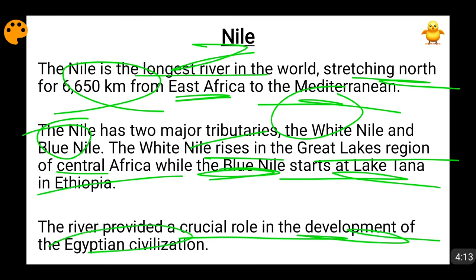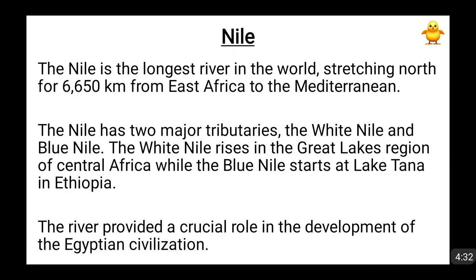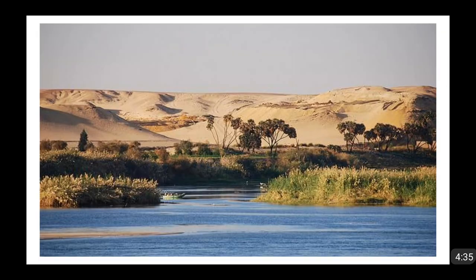All the ancient civilizations — Egyptian civilization, Mesopotamia civilization, and valley civilizations — developed at the banks of rivers, because rivers provide water, which is an essential and basic element for the development of life. You can see this Egyptian civilization developed at the banks of River Nile, flowing here in this locality. It's a beautiful scene.